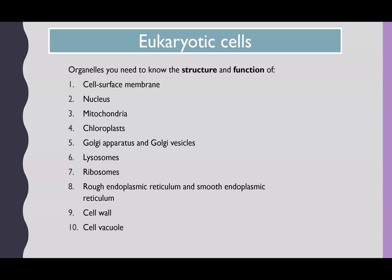The 10 organelles that you need to know in detail are the ones listed here. For each of these 10, you need to be able to describe the structure of the organelle and then give an explanation of the function. You may want to summarize this in a table with one column for the organelle, one for the structure, and another for the function. This topic also works really well as flashcards for revision.